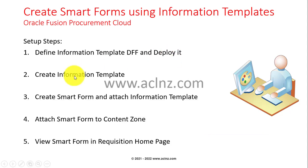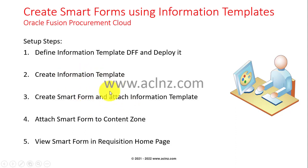Once you have done that, you create an information template and attach that predefined descriptive flex field context within the information template, then save it. Then you create a smart form and attach this previously created information template, save the details, and then attach the smart form to a content zone. If the content zone is not predefined, you've got to predefine it — this is where the smart form would be visible in the requisition work page.